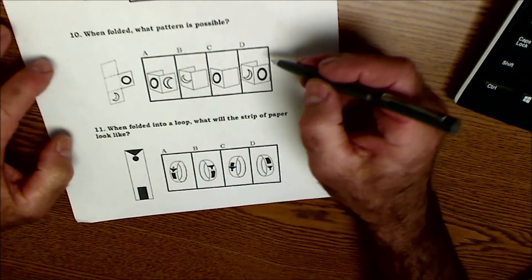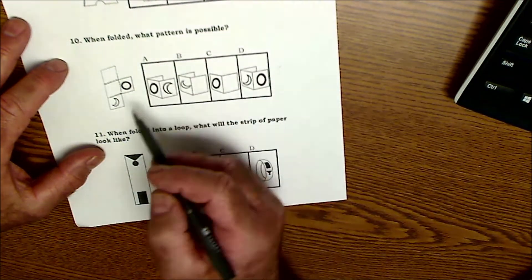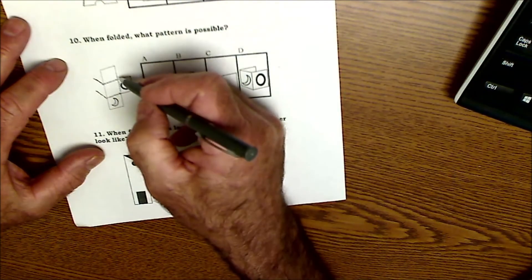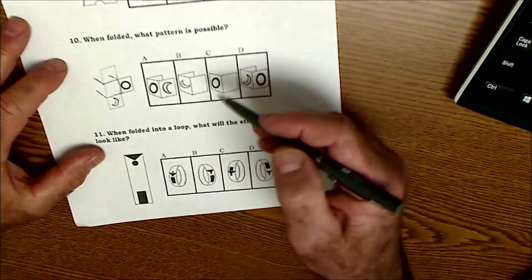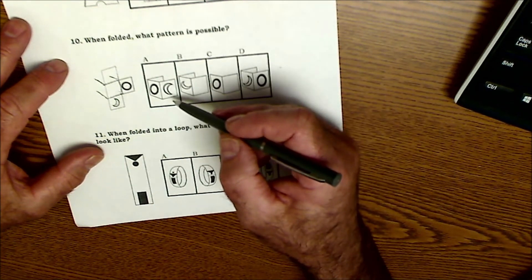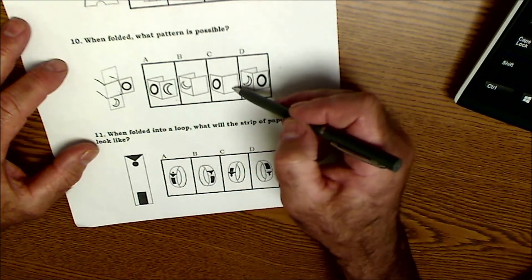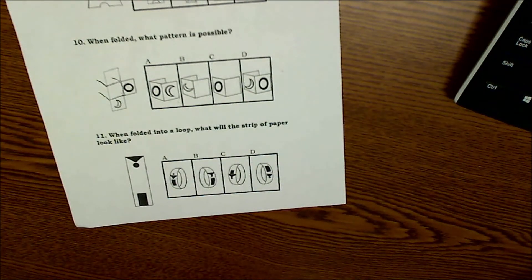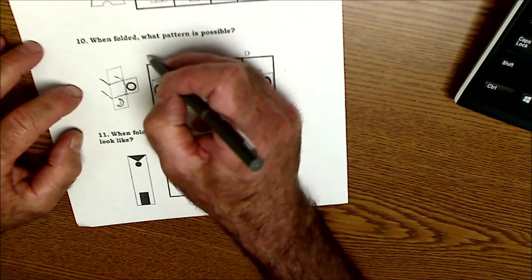There's some kind of spatial reasoning here on number 10. When folded, what pattern is possible? Or I guess they would have to fold down back this way and that way, right? And then this one would fold back in there. I don't know if that helps saying it. That's a hidden line. So I could see the circle, if they're folded that way, could be next to the moon. So it could actually be this. It couldn't be that. It couldn't be that one. And it couldn't be that one either. So the only way the circle could be next to the moon as you fold it up would be answer A there.